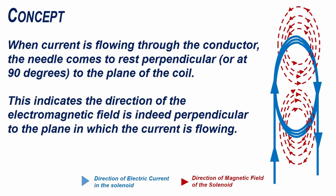When current is flowing through the conductor, the needle comes to rest perpendicular or at 90 degrees to the plane of the coil. This indicates the direction of the electromagnetic field is indeed perpendicular to the plane in which the current is flowing.